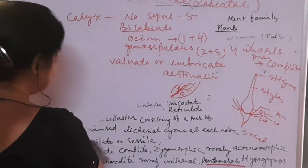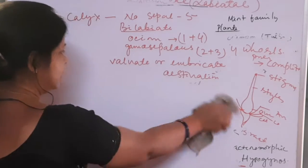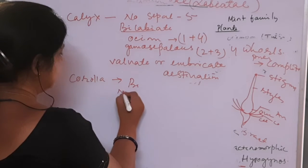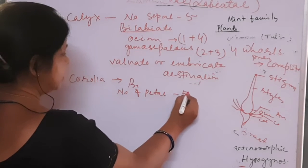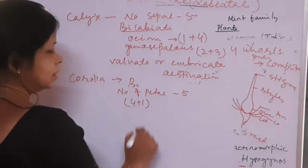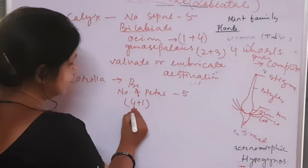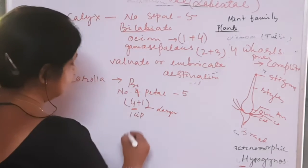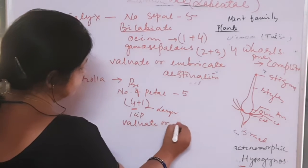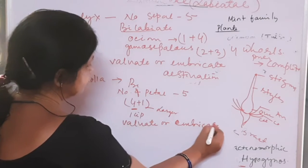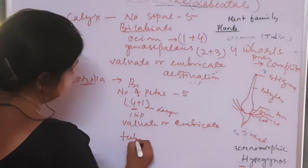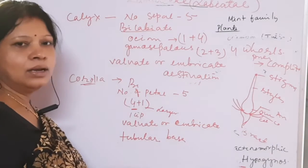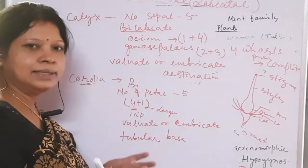The corolla also has five petals arranged in a bilabiate condition, in a 4 plus 1 arrangement opposite to the sepal. Four petals unite to form one lip and one larger petal forms the other lip. The aestivation is valvate or imbricate, and the corolla forms a tubular structure at the base with two lips.